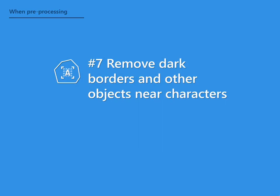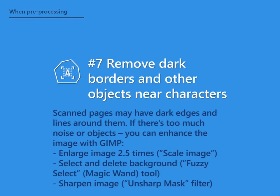Tip 7: Remove Dark Borders and Other Objects Near Characters. Scanned pages may have dark edges and lines around them. If there is too much noise or unwanted objects, you can enhance the image using GIMP: enlarge the image 2.5 times, then select and delete the background near letters, and sharpen the image using the Unsharp Mask filter.